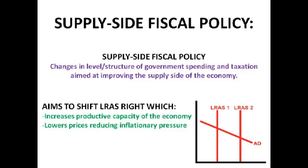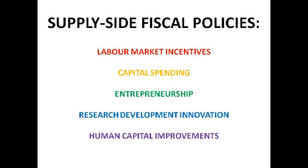Supply-side fiscal policy is probably new from GCSE, introduced at AS level. It covers changes in the level and structure of government spending and taxation aimed at improving the supply side of the economy — essentially increasing our ability to produce goods and services, aiming for a rightward shift of the long-run aggregate supply curve, which also reduces inflationary pressure. There's quite a wide range of supply-side fiscal policies to cover.